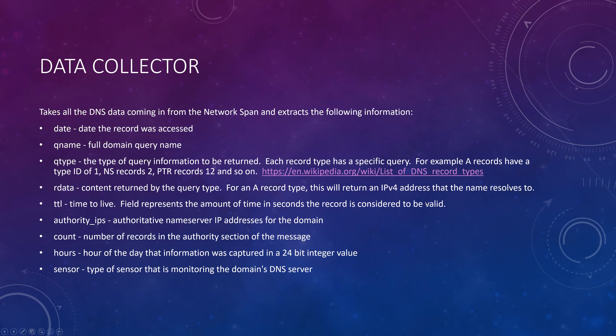The data collector extracts the following information from the raw DNS data: the date the record was accessed; the queue name, which is the full domain query name; and the queue type, which is the type of query information to be returned. Each record type has a specific query — for example, A records have a type ID of one, NS records (name server records) have an ID of two, pointer records have 12, and so on. A wiki list is provided for anyone interested in seeing the additional query types available when calling out to a DNS server.